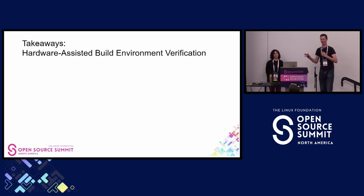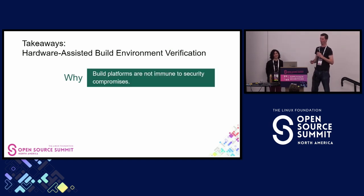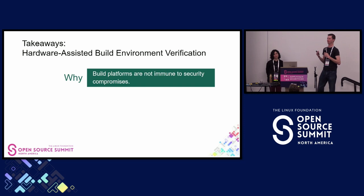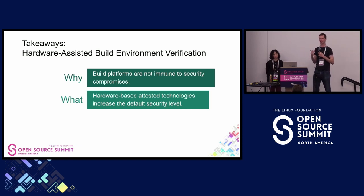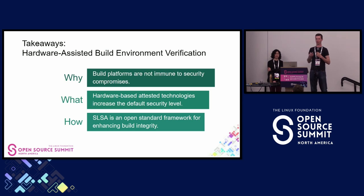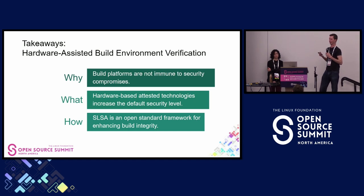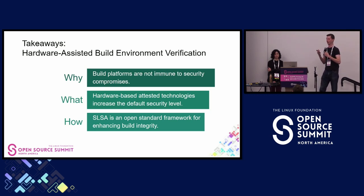The three key takeaways: First, we need to be thinking about build platforms in the threat model — they are not immune to security compromise. They are large systems with lots of people running in them, so compromise is inevitable. Second, we can use hardware-based attestation technologies to really increase the default security level, making certain types of attacks significantly harder to achieve. Third, we want to do this through SLSA, because it is this open standard framework for securing builds and increasing security for both open and closed source builds, achieving wide adoption in many industries and being pushed by the OpenSSF.